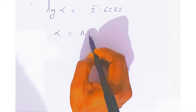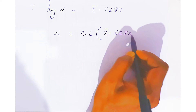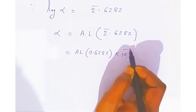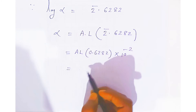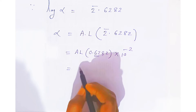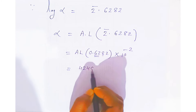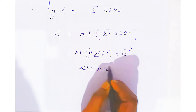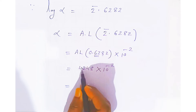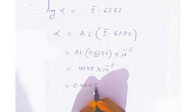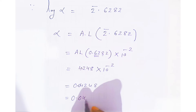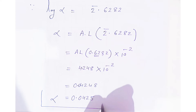We have to find alpha, so the log comes to the other side as anti-log. You have to take the anti-log of 2-bar 0.6282. When you take the anti-log, you take anti-log of 0.6282, and the 2-bar gives 10 to the minus 2. In the anti-log table, looking at 62, column 8 with mean difference, you get 4248. Since the characteristic gives 0 before the decimal, multiplying by 10 to the minus 2 shifts the decimal, giving 0.4248 × 10⁻¹, which is approximately 0.0425. So the degree of dissociation alpha is 0.0425.